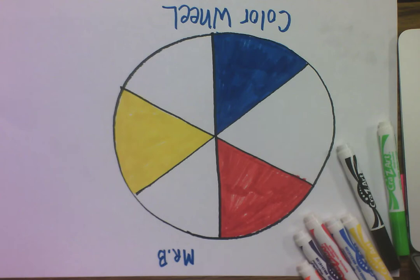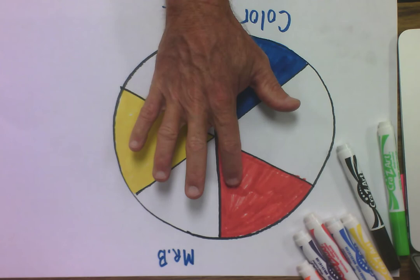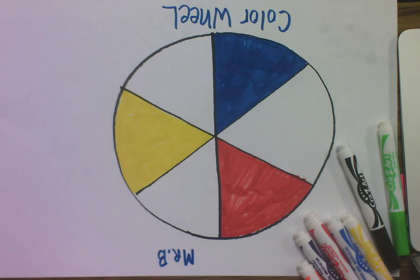As you can see, we have worked on the primary colors in this wheel: red, yellow, and blue.